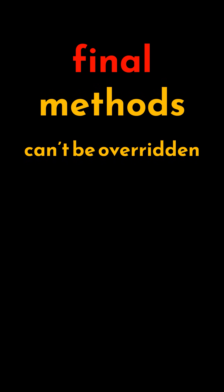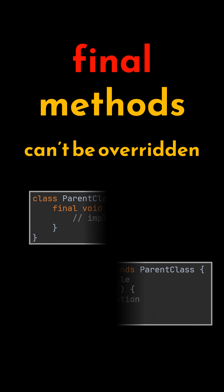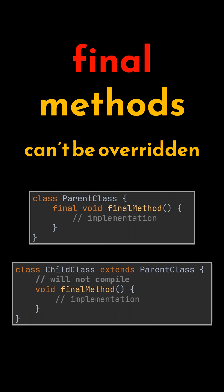When the final keyword is applied to a method, it indicates that the method cannot be overridden by subclasses. In this example, overriding the final method created in the parent class by its child class will cause a compilation error.